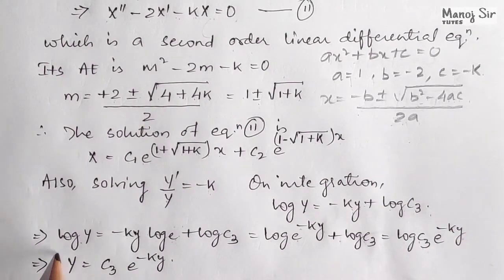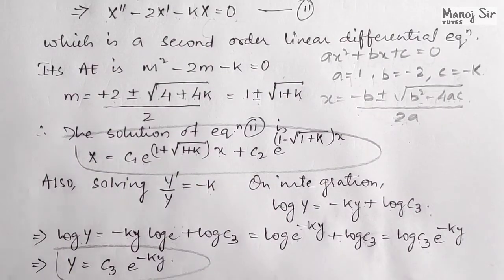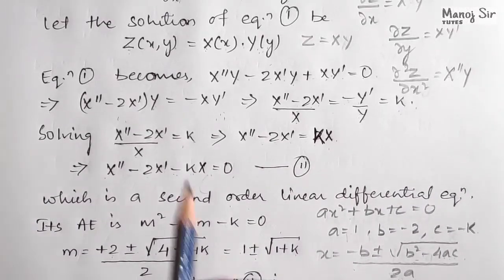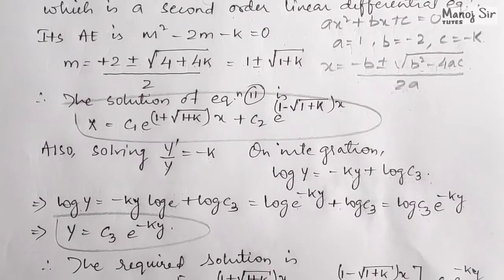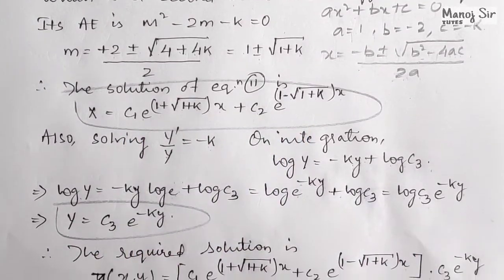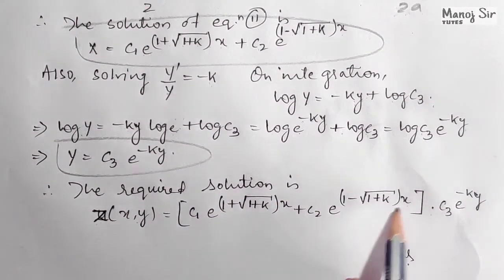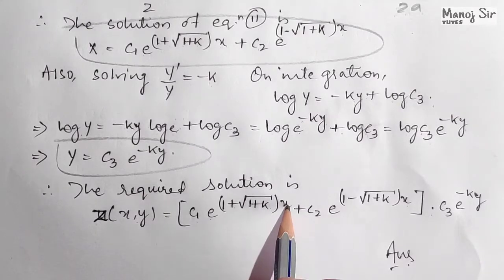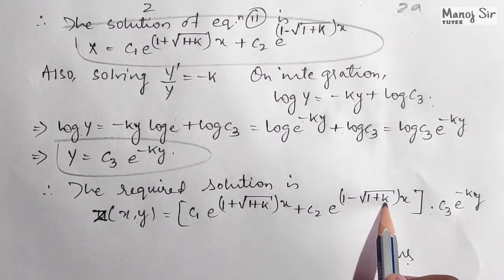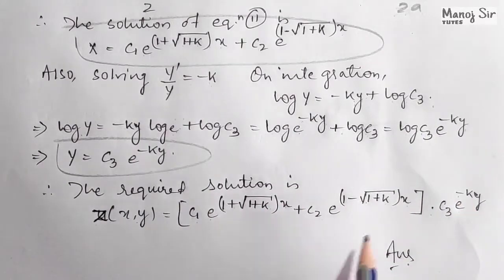We now have X and Y, so the required solution z equals X·Y is: z(x, y) equals [c1 times e to the power (1 plus root of 1 plus k) times x plus c2 times e to the power (1 minus root of 1 plus k) times x] times c3 times e to the power minus k·y. This is the required solution. Thank you so much.